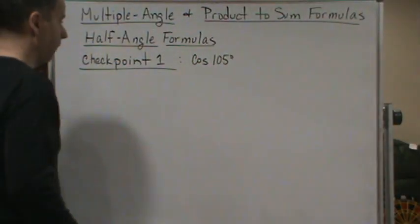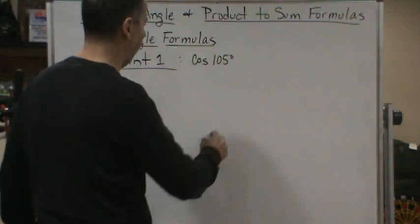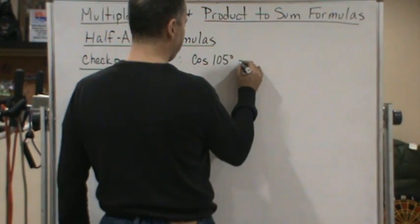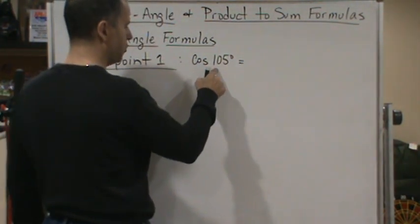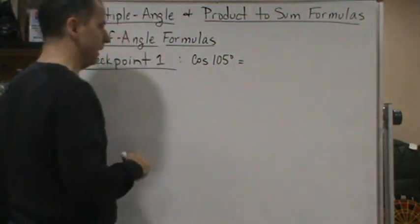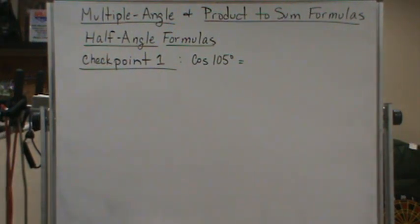Alright, so here we go. First, this is half of 210, so we're going to use the half-angle identity for cosine. In this case, cosine is going to be positive, right?